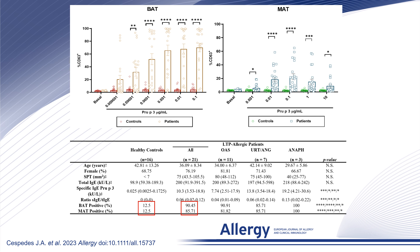Basophil activation test displayed great values of sensitivity and specificity, according to our previous results. Mast cell activation test also had great sensitivity and specificity, and interestingly, from the two patients who tested negative in BAT, one was rescued as positive in MAT. Regarding specific IgE for Pru p 3, it had perfect sensitivity but not so good specificity.